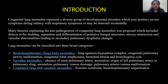Second, vascular anomalies including absence of main pulmonary artery, anomalous origin of left pulmonary artery or pulmonary sling, anomalous pulmonary venous drainage, and pulmonary arteriovenous malformation. Third, combined lung and vascular anomalies, which include Scimitar syndrome and bronchopulmonary sequestration.